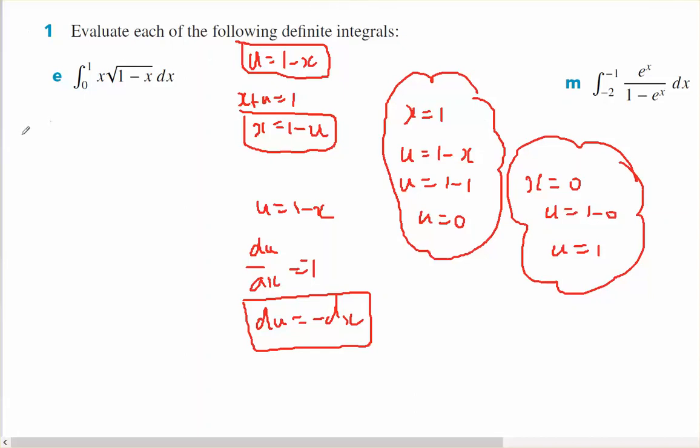So I'm now going to have this. I want negative dx. Therefore, if I make this negative dx, I need to put a negative out the front to balance that. So I've got negative when x equals 0, u equals 1.